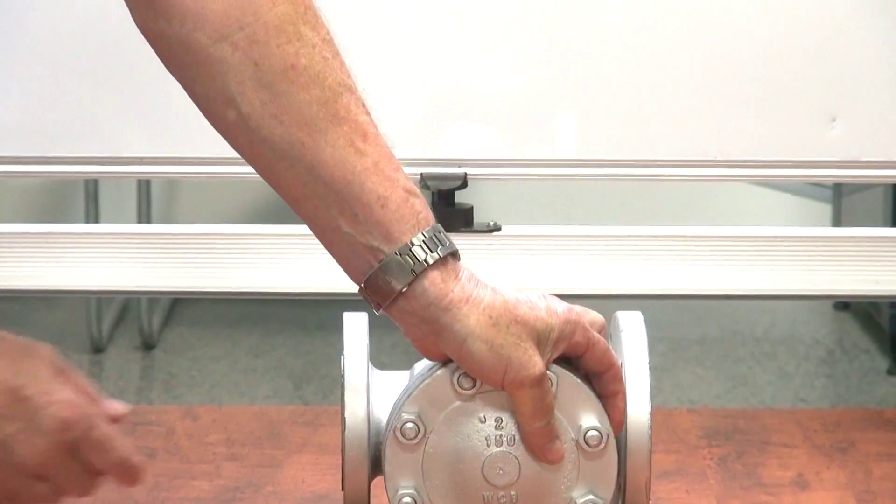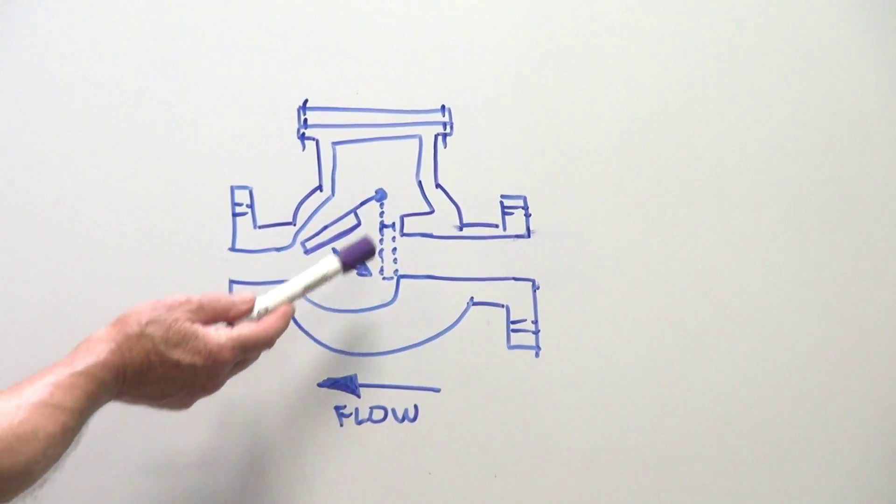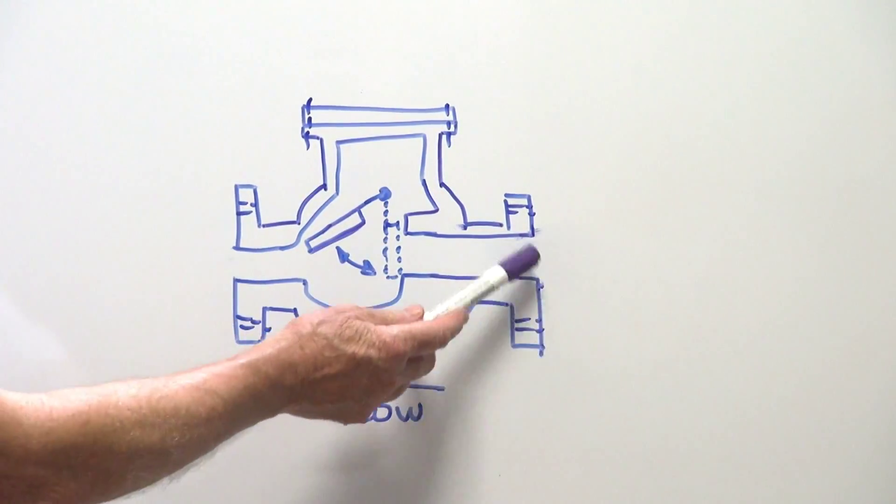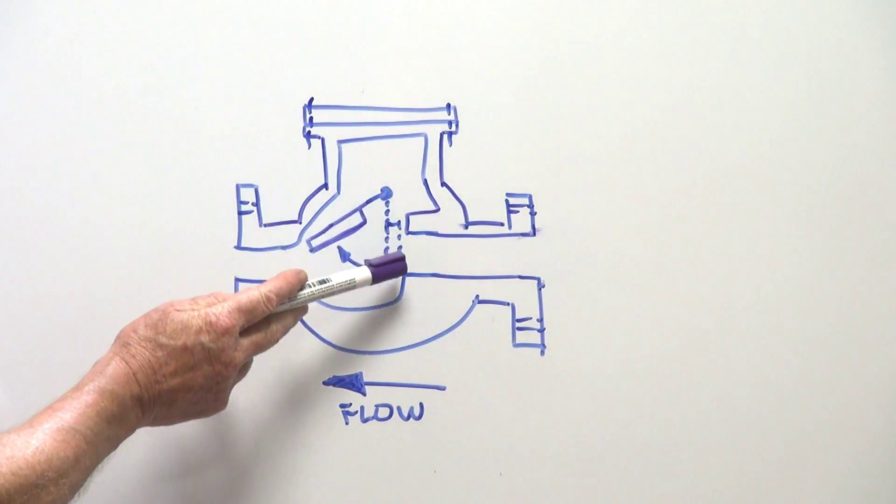I'll just show you on the sketch I've done up here. Here's the actual valve body flanged here, direction of flow, and we've got our lid up the top. So inside here we've got this flapper which is hinged.